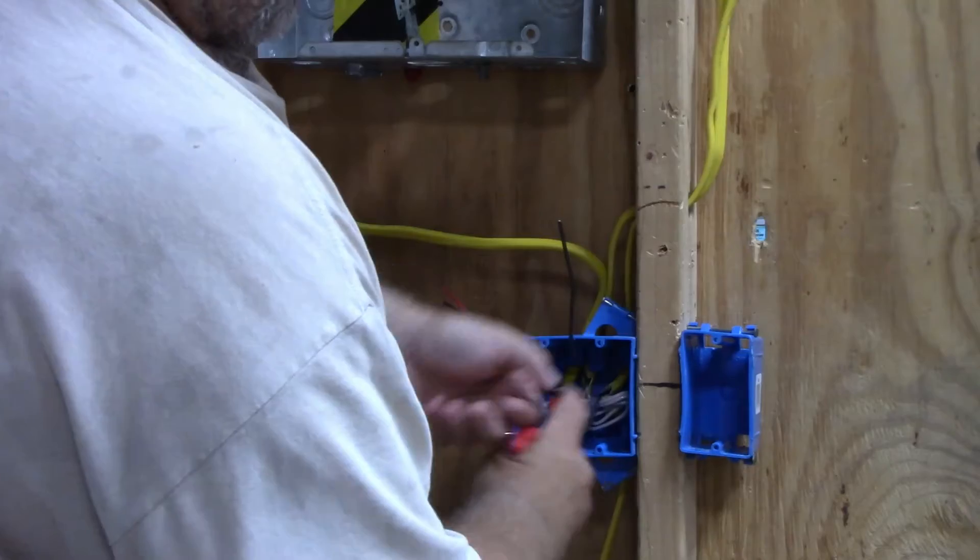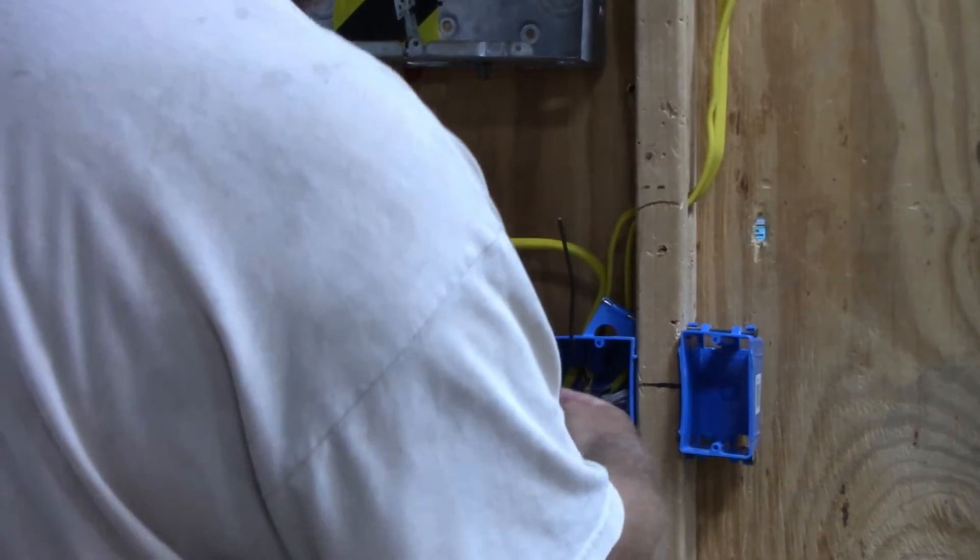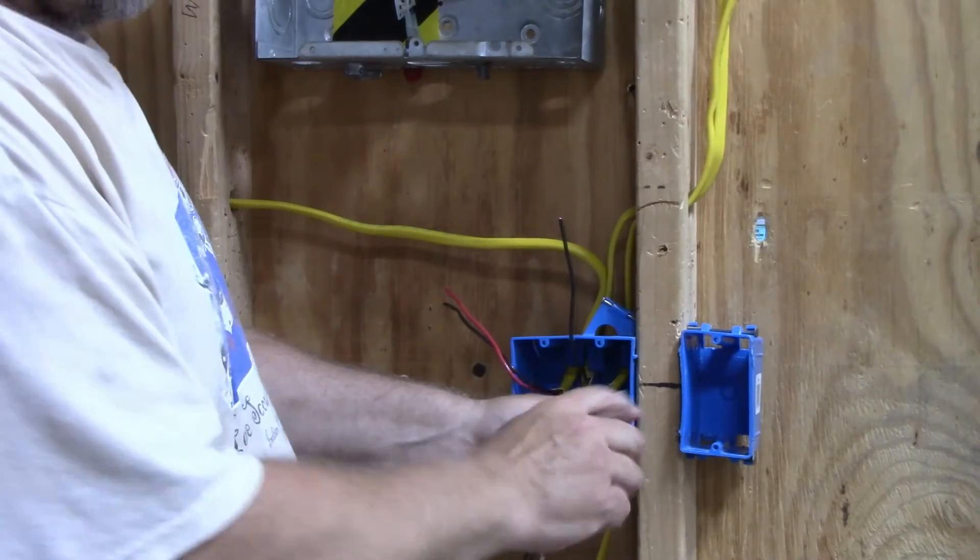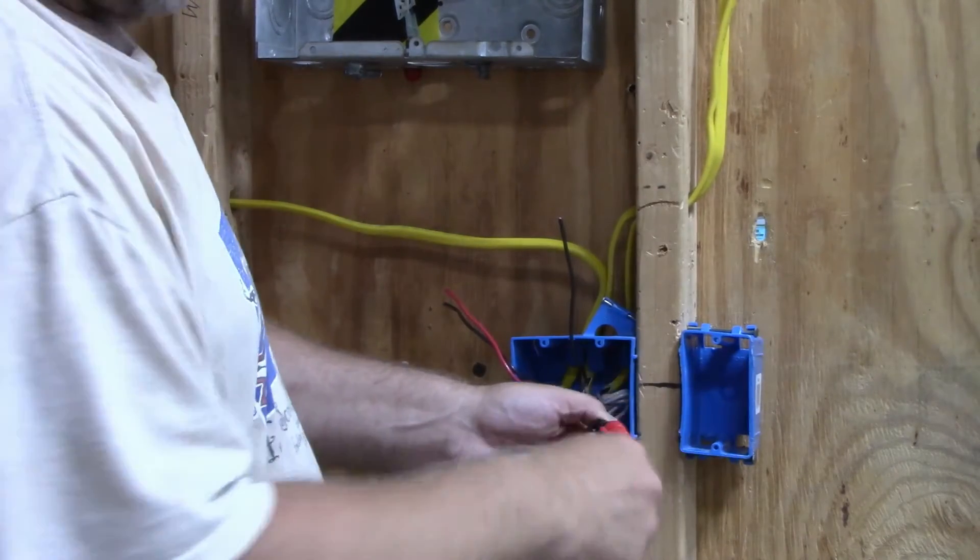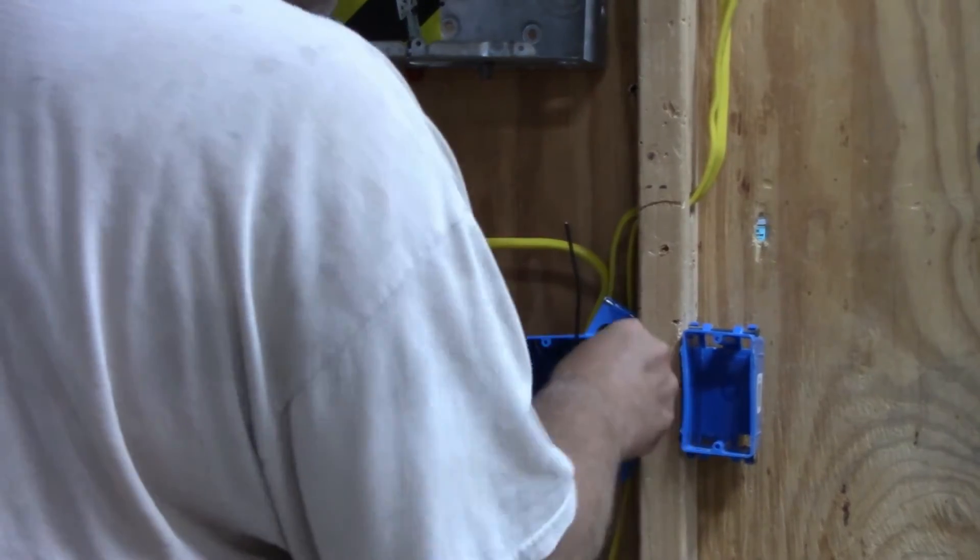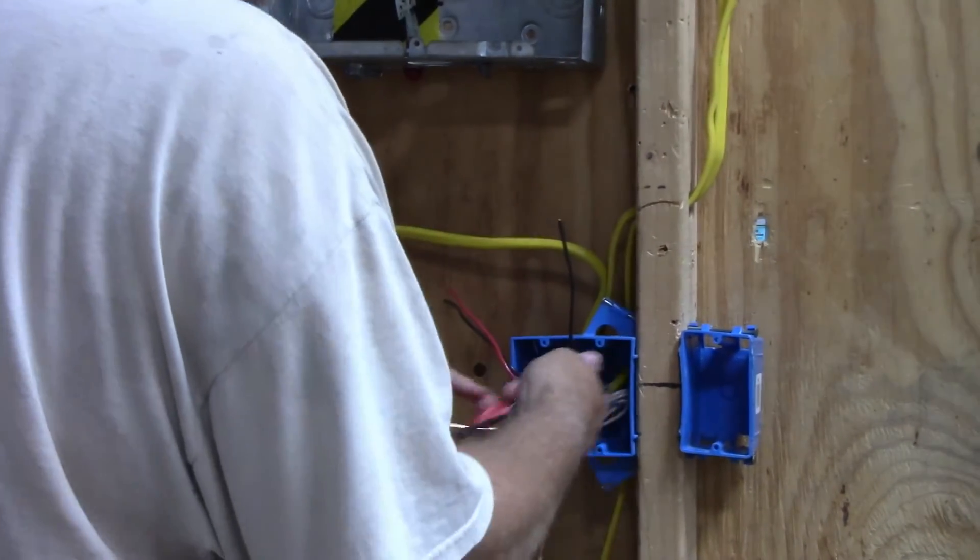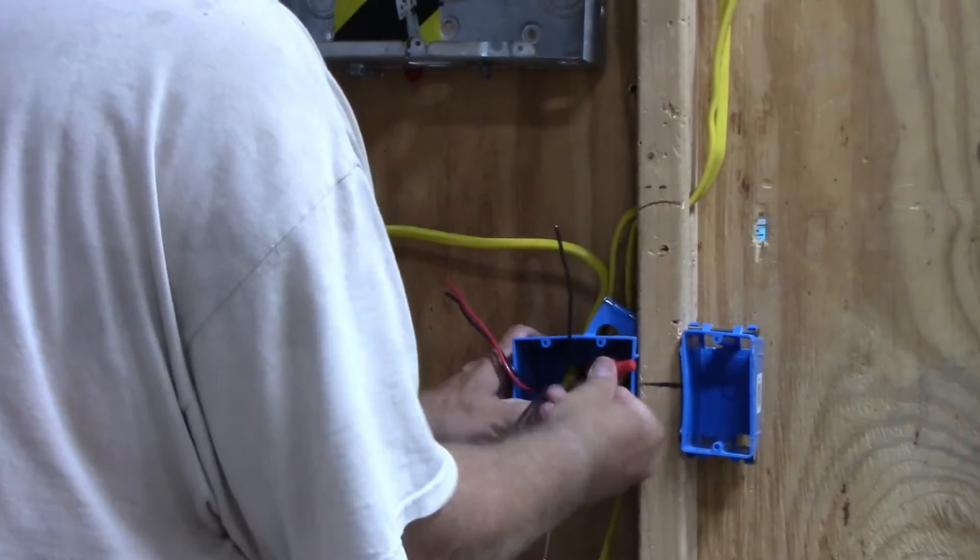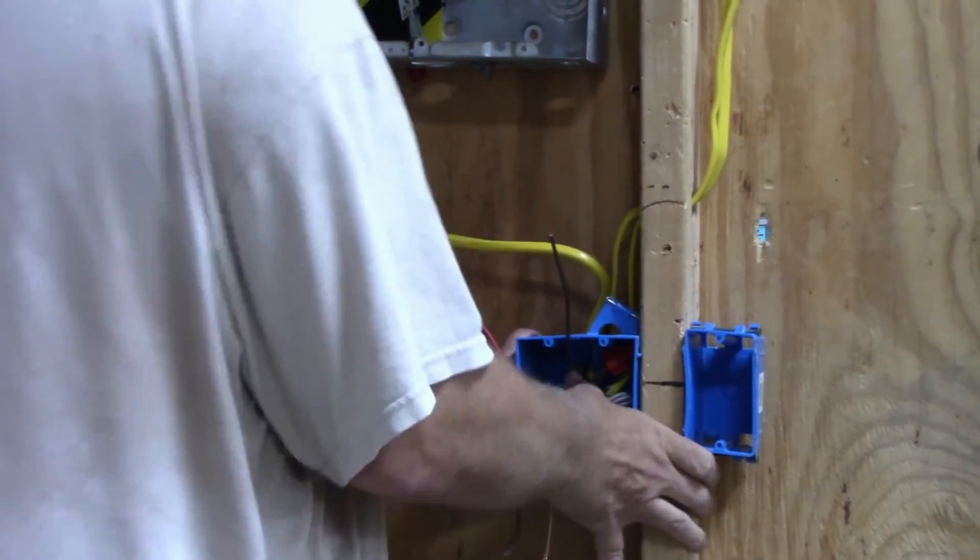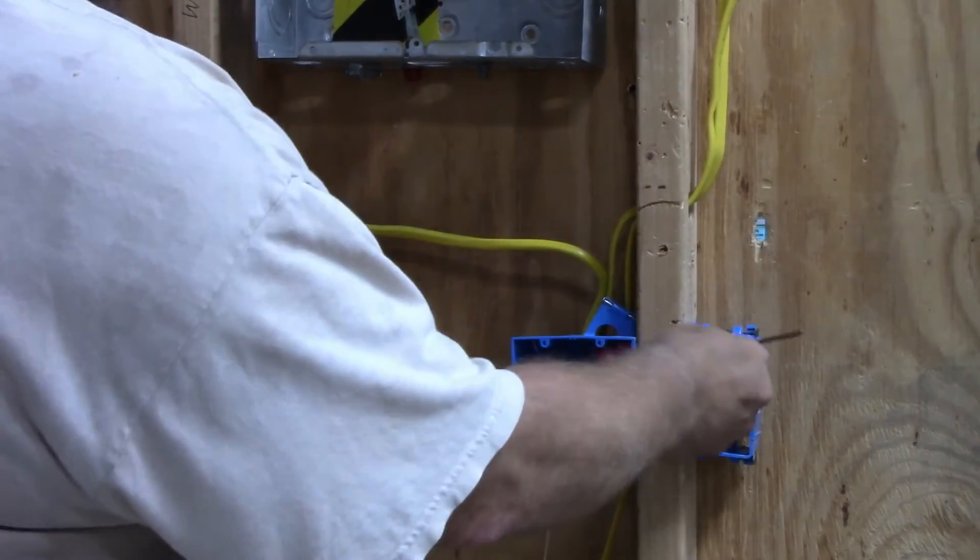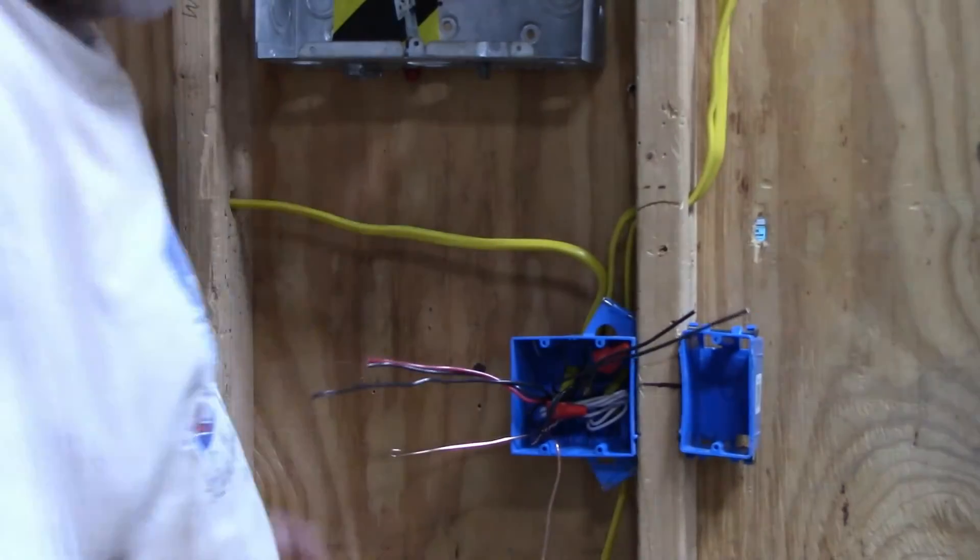Make sure again you get a good connection. If you feel more comfortable, you can use your linesman's pliers and twist them together, then put the wire nut on there. I'm going to fold them into the box and get them out of the way. So I have two wires: power going to the light and power going to the switch leg.